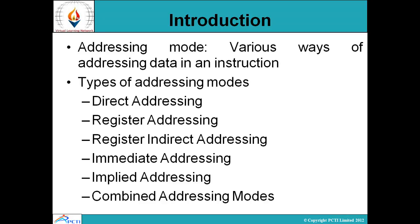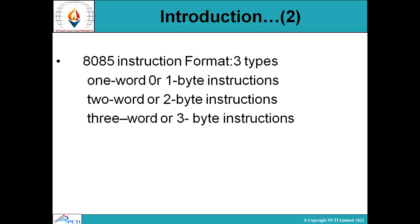The types of addressing modes include direct addressing, register addressing, register indirect addressing, immediate addressing, implied addressing, and combined addressing modes. These are the different addressing modes that we can use in instructions in the 8085 microprocessor.